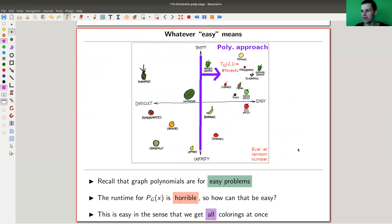And in some sense, I wanted to say that the graph polynomials are for easy problems, but the runtime for this polynomial is really horrible. So what does easy actually mean here? And in this sense, I would like to use easy in the way that it encodes all colorings at once.